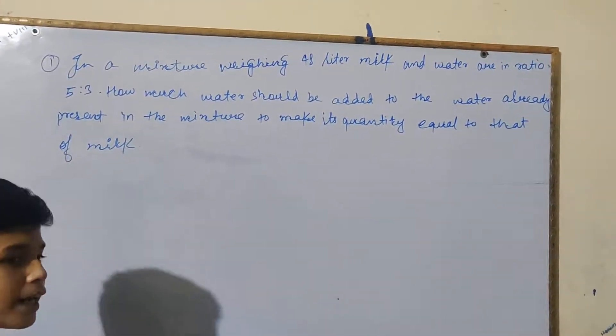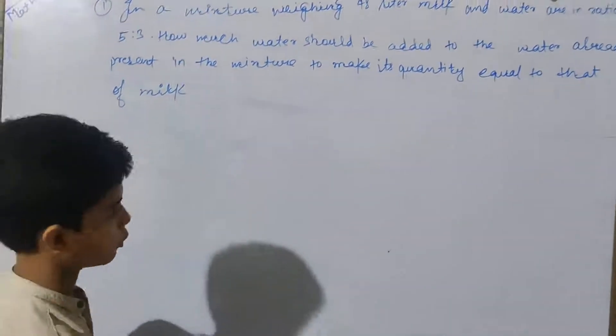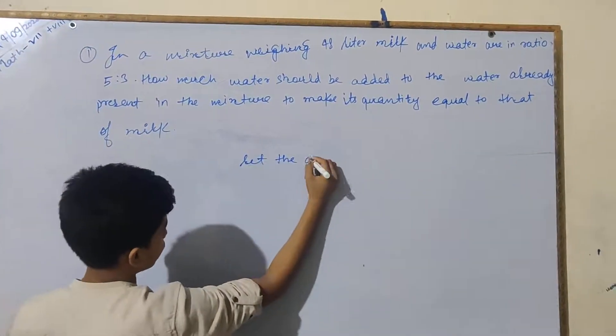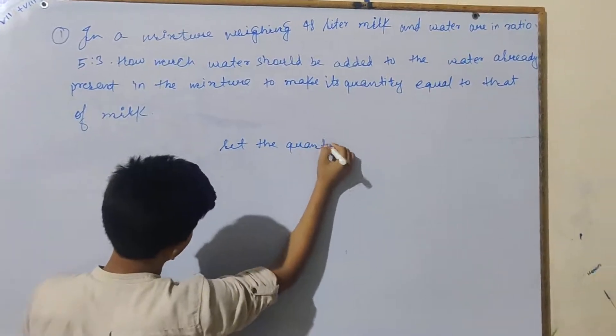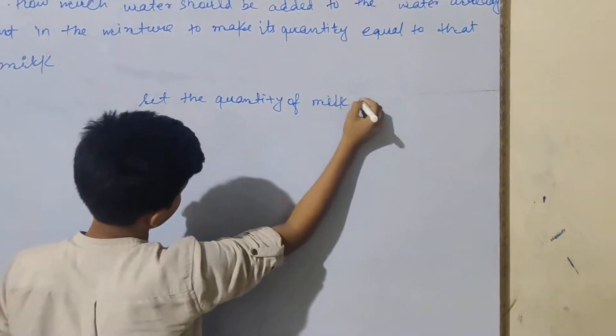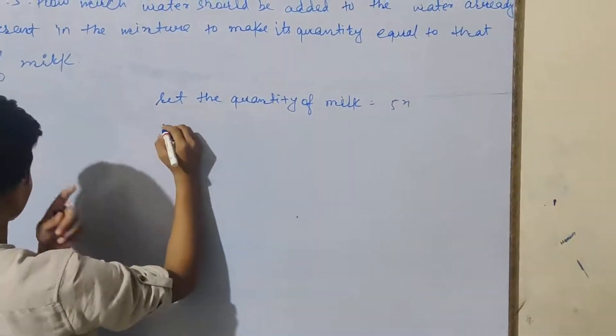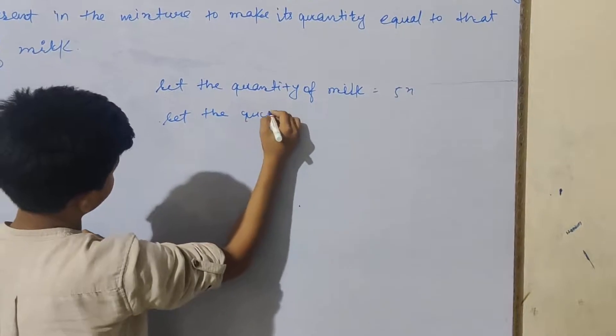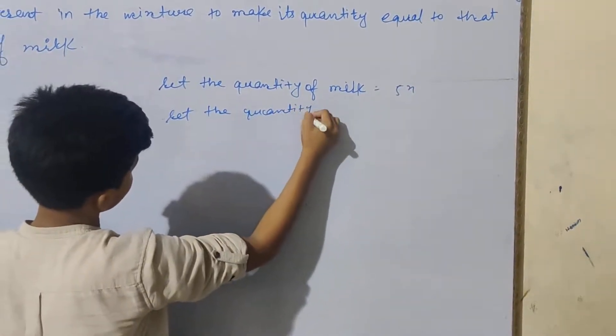In a mixture, 48 liter milk and water are in ratio 5:3. How much water should be added to make the water quantity equal to that milk? The original mixture is 48 liters, in which there is milk and water. Milk is 5 and water is 3 in ratio 5:3. We need to know how much water to add.